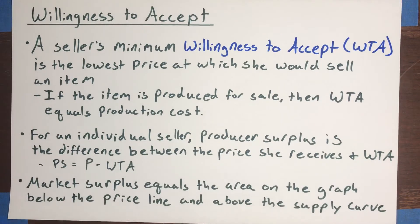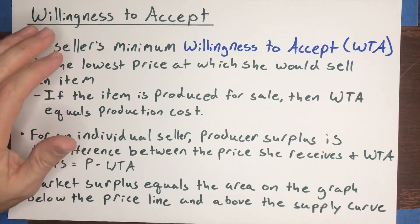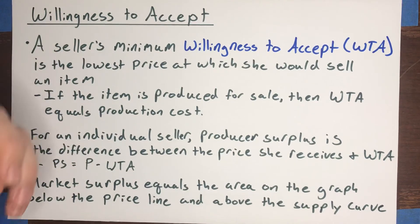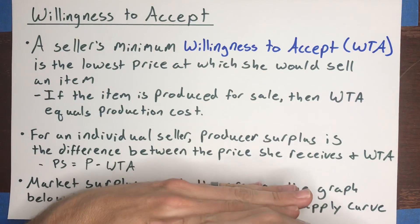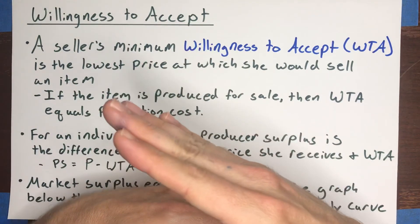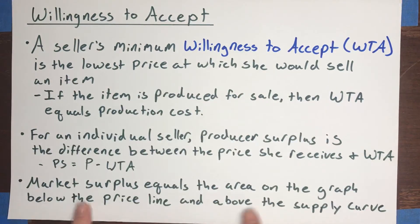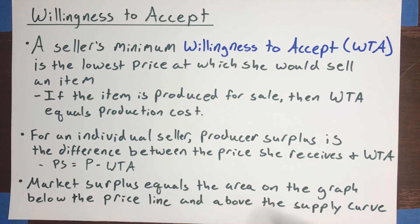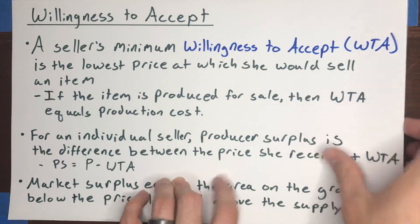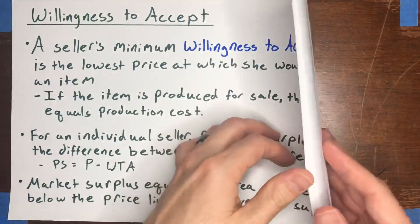Market producer surplus is equal to the area on the graph that is below the price line and above the supply curve. Remember, market consumer surplus is all of the area that's above the price and below demand. But for market producer surplus, it's everything below the price and above the supply curve. So let's go through a concrete example of that.